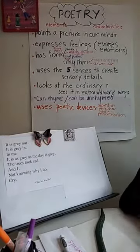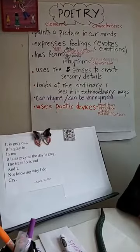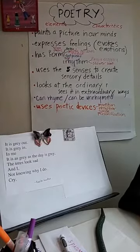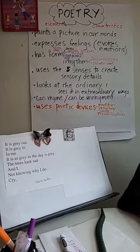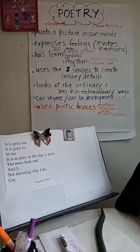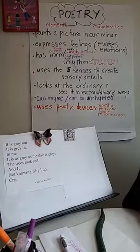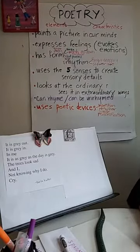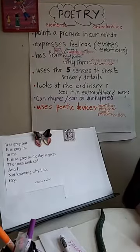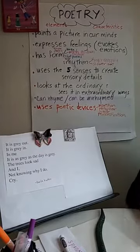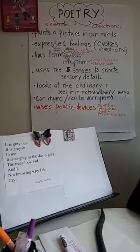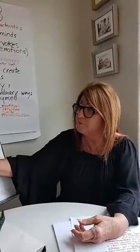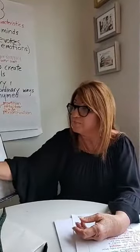It is gray out. It is gray in. In me, it is as gray as the day is gray. The trees look sad. And I, not knowing why I do, cry. And as we said when you looked at this poem, she really is giving us this feeling — setting the mood with her words, but also through the deliberate use of ending her lines at various places.